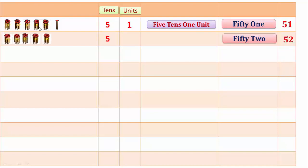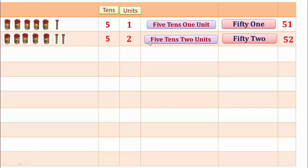52. Here 1, 2, 3, 4, 5 — 10 and 1, 2 units. If there are 5 tens and 2 units, they make 52.